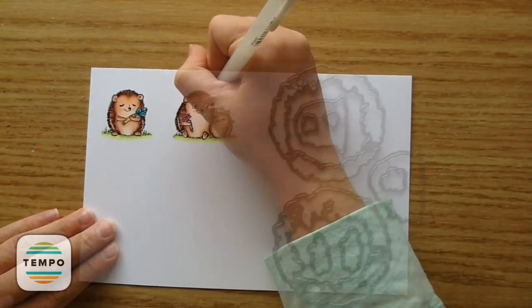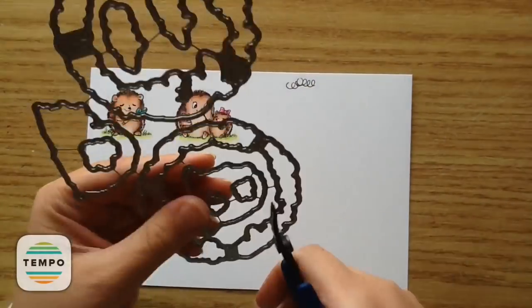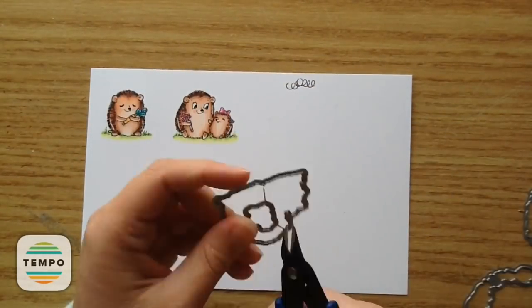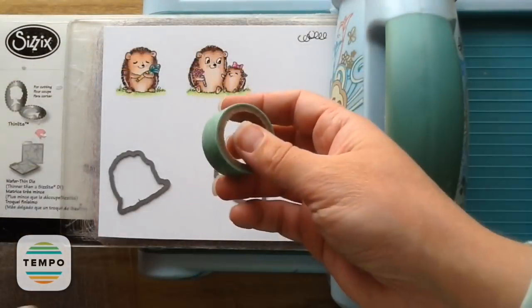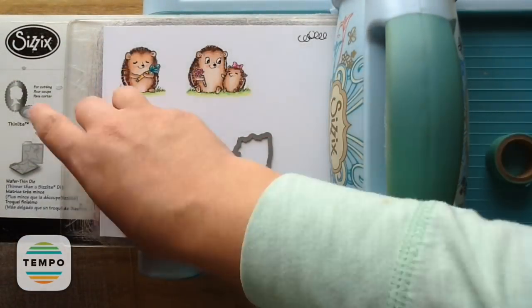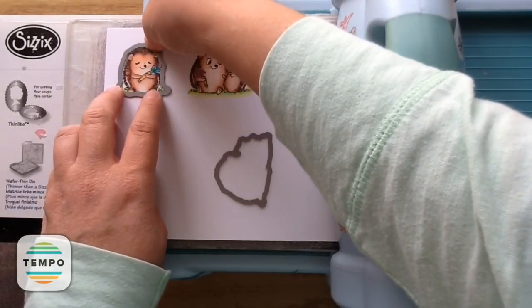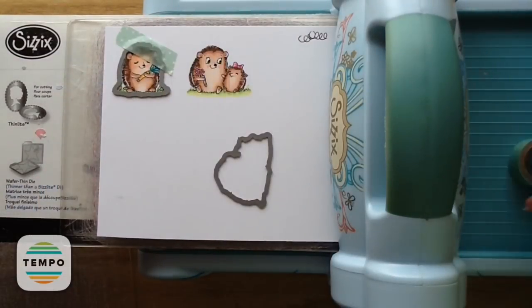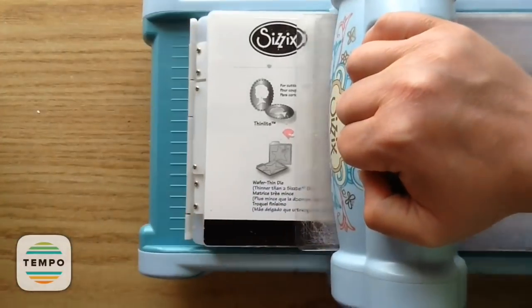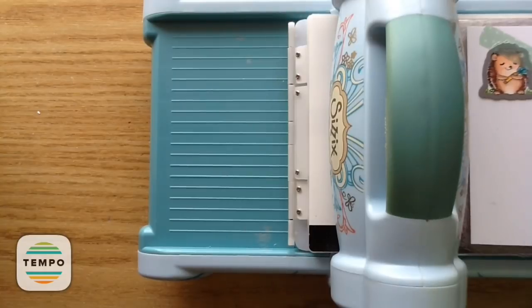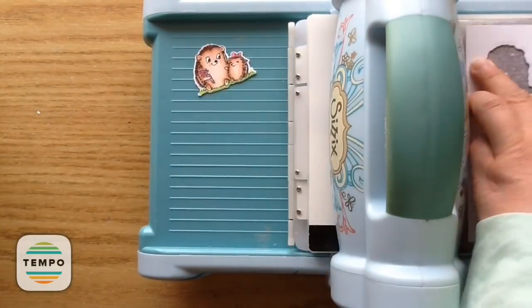So now I'm going to take my coordinating dies and I'm just going to trim out the two that I'm going to use for this project. And I also added two little dimensions of white with the jelly pen just to give it a little bit of accent around the outside. So I'm just taking a piece of washi tape and holding those down so they stay in place. And I can run them through my die cutting machine. And I'll just show you the little reveal. So cute.